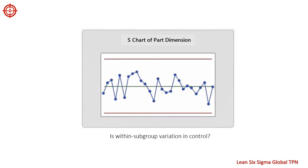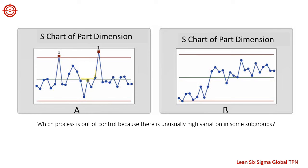Here are some examples. Based on this S chart, is the variation in 13 subgroups in control? Yes, because no sample standard deviations are outside of the control limits and no patterns exist. The within-subgroup variation is in control. The S chart contains no subgroup standard deviation values beyond the control limits and no clear patterns in the data, so we conclude that the process is in control with respect to variation within the subgroups.